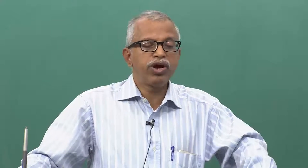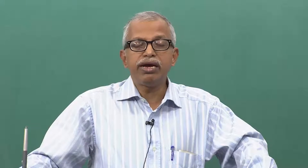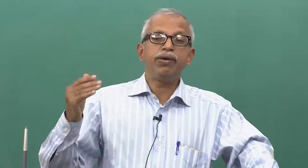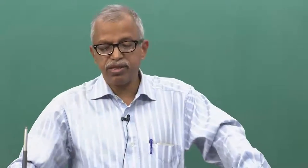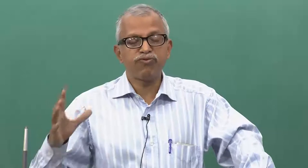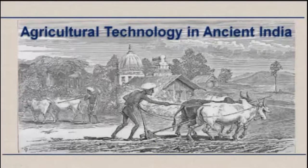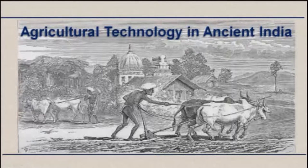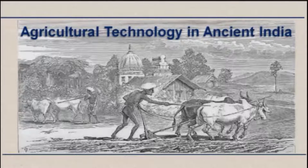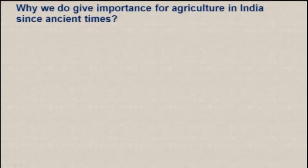If you look at our scriptures, agriculture is very important because anna pratishtadeva — even the god has to rely on food. So food is very important. We will be looking at what technologies were available in ancient India pertaining to agriculture and farming, and how we can adopt them. But before that we need to ask certain questions.